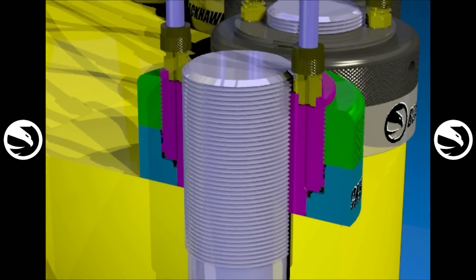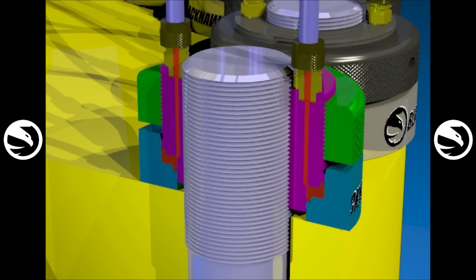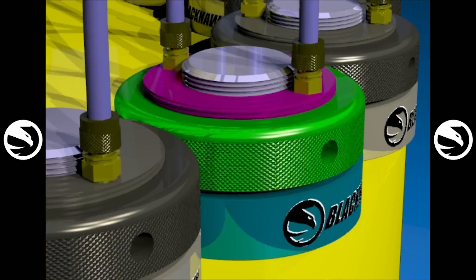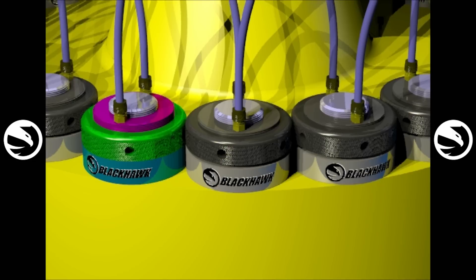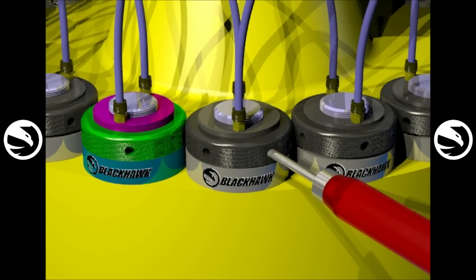The pump pressure produces a force that stretches the bolt evenly across all Blackhawk nuts. The bolt load is then locked into place by turning the locking collar on each Blackhawk nut by hand until it stops.